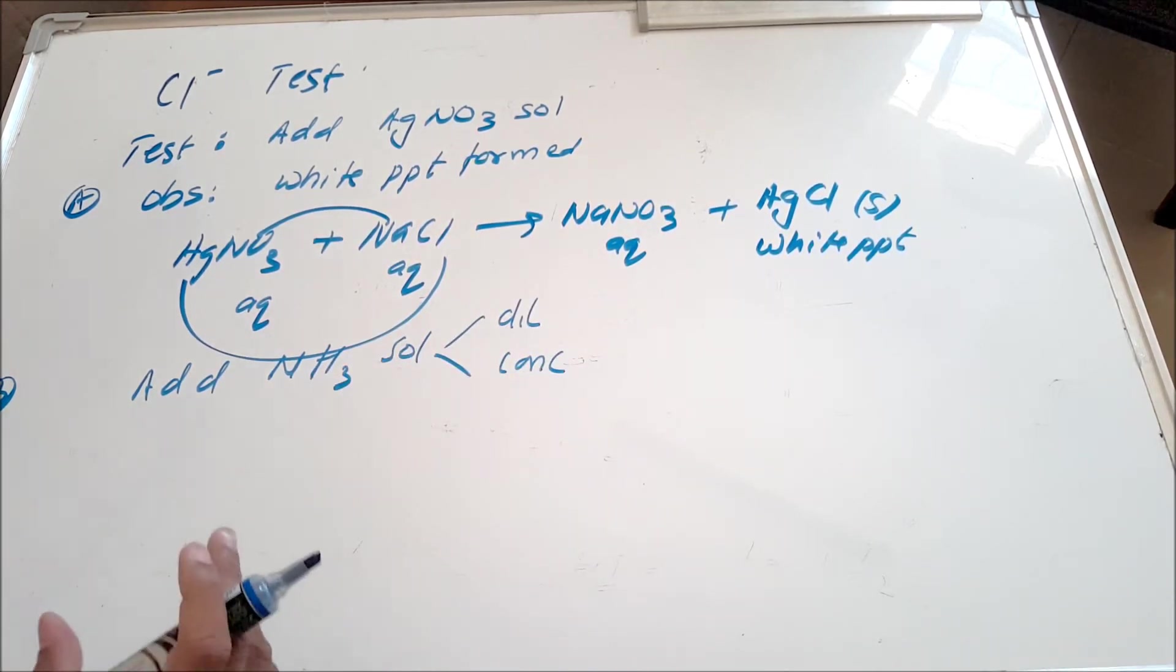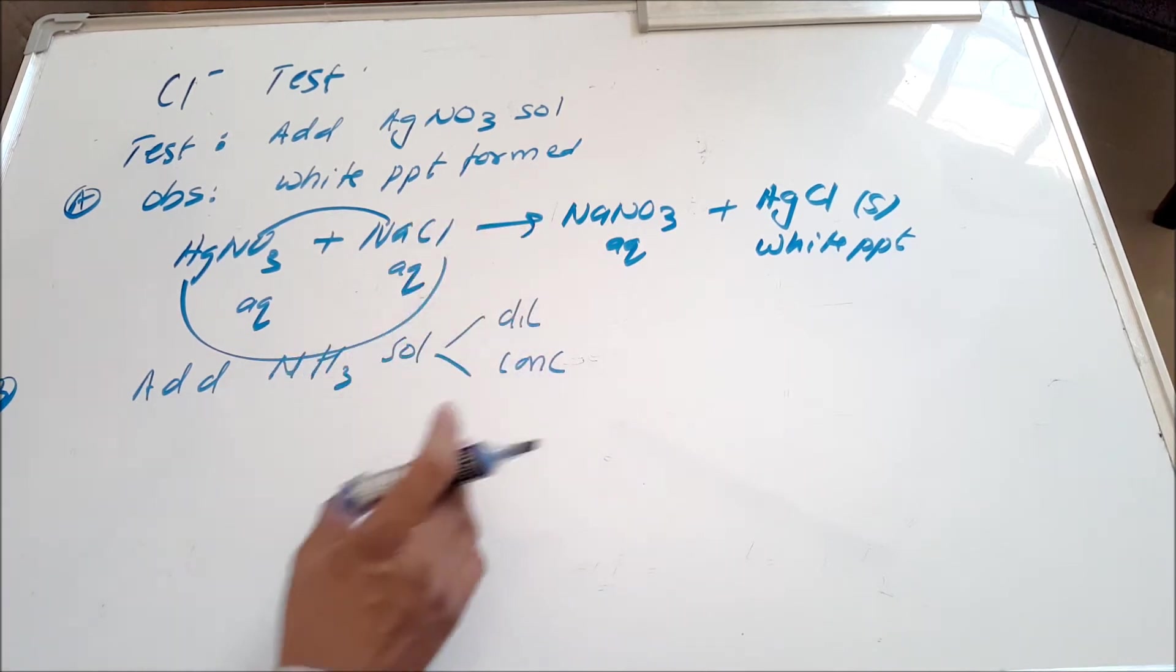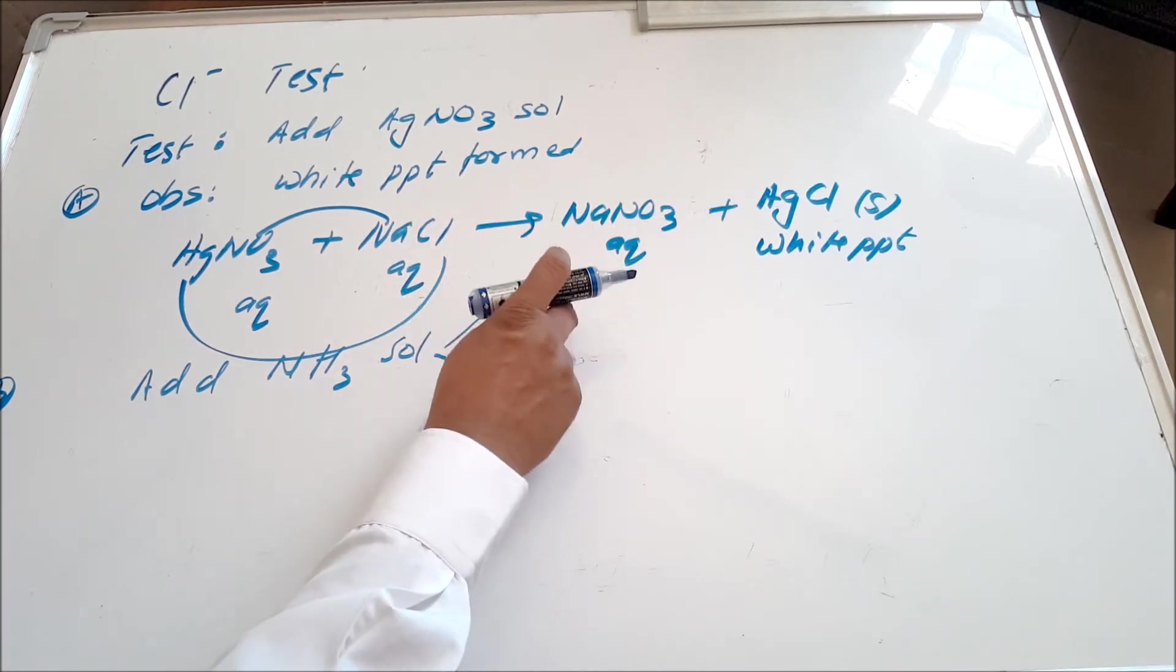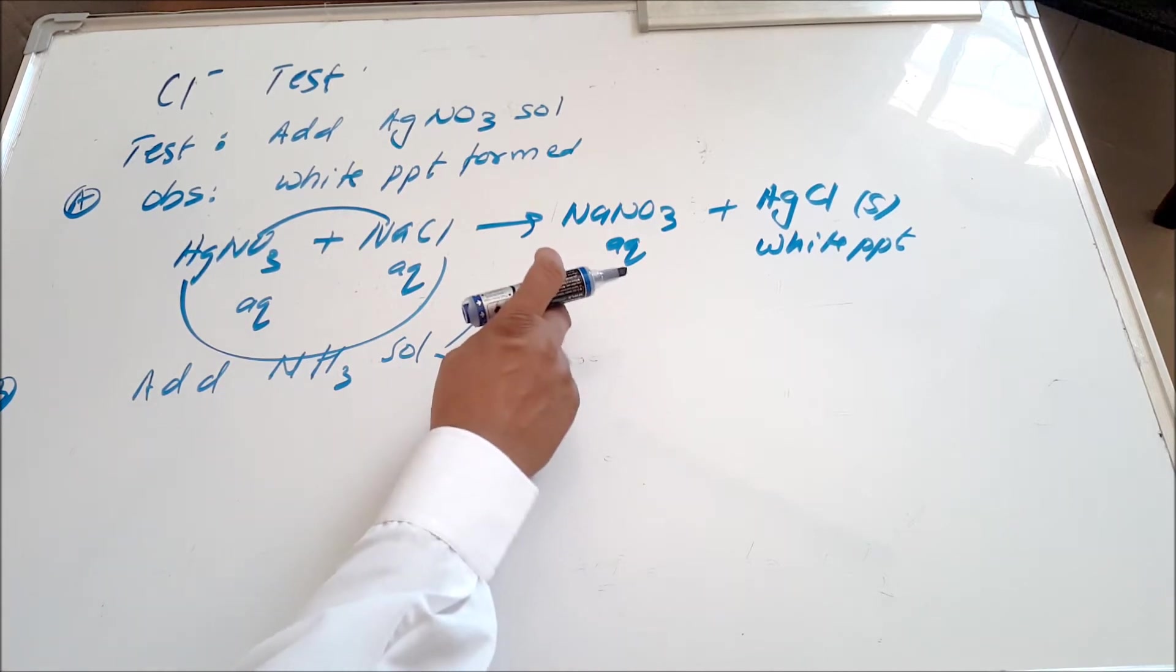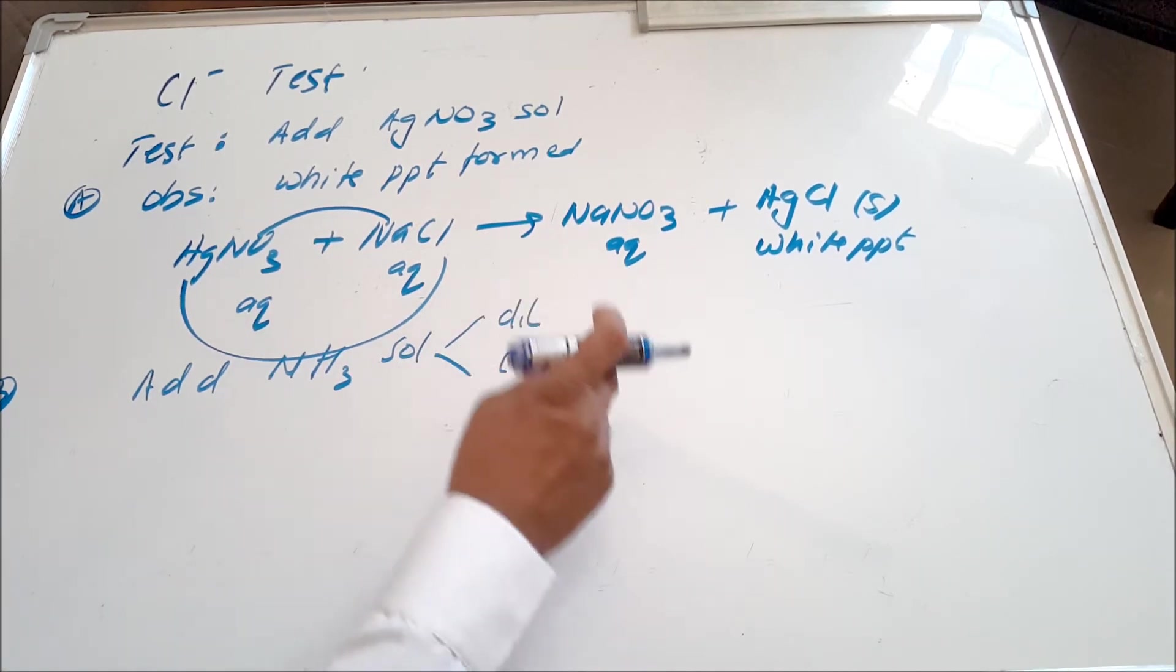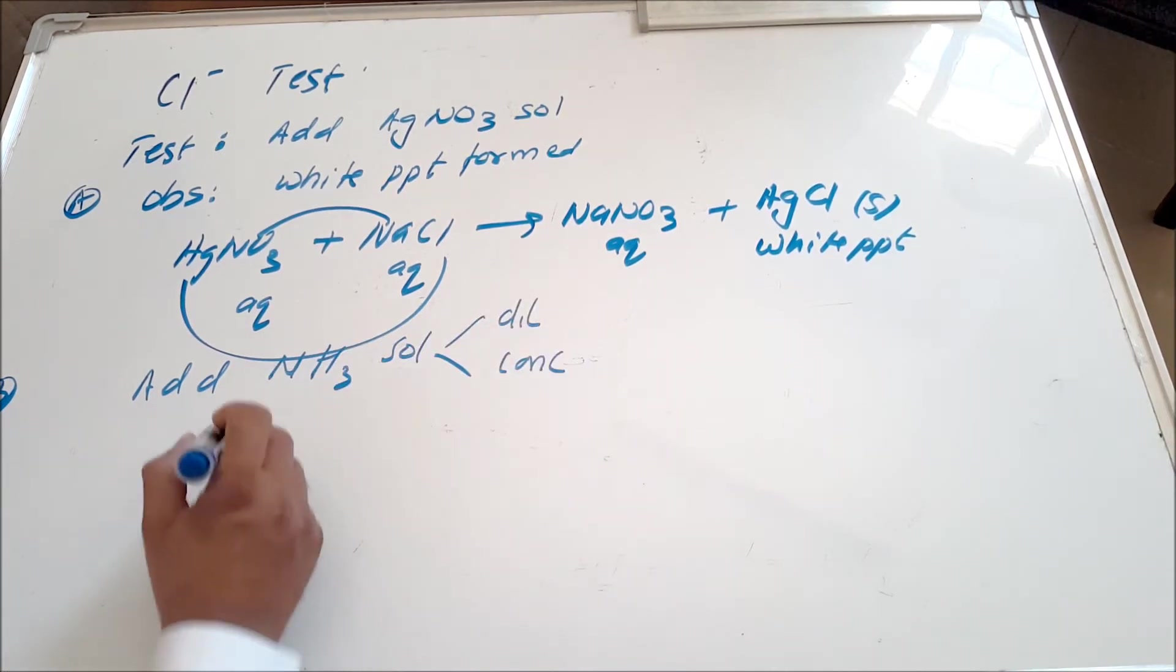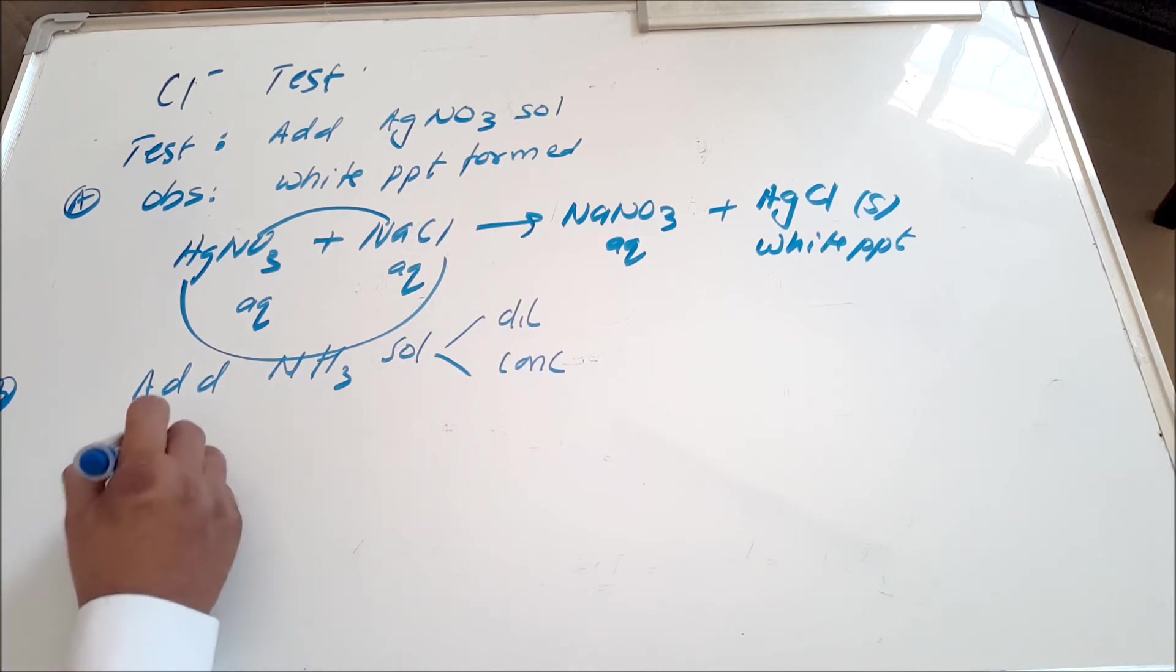The results that you get are identical in both of them. That white precipitate dissolves in dilute ammonia. Obviously, since it dissolves in dilute ammonia, it will also dissolve in concentrated.